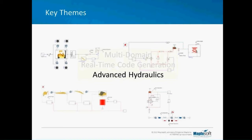MapleSim ships with a basic hydraulics library that has a small number of essentially idealized components. It's ideal for systems where hydraulics are a small focus of the modeling and where you need to model flow rates and pressures at a fairly coarse level. However, you may have more complex design considerations — for example, counteracting runaway loads, attenuating pressure surges due to fluid compressibility with an accumulator, modeling power loss due to fluid leakage, and needing a wider range of hydraulic components. This demands more sophisticated modeling technology.